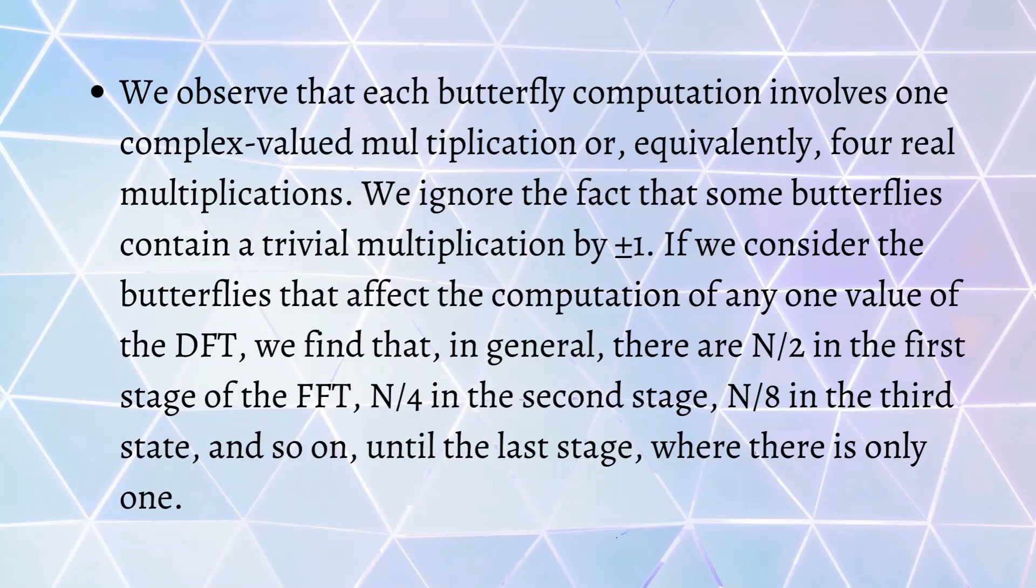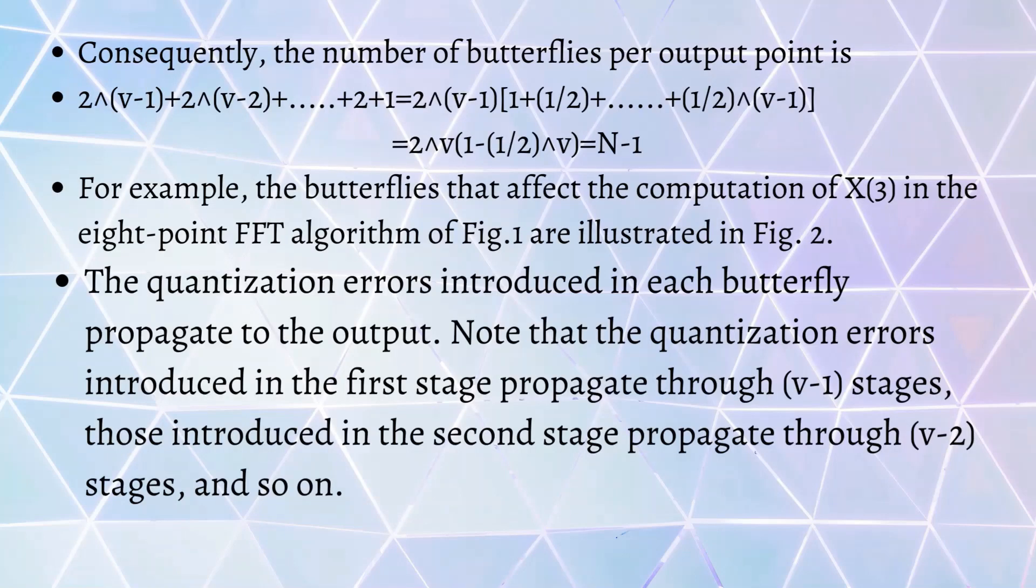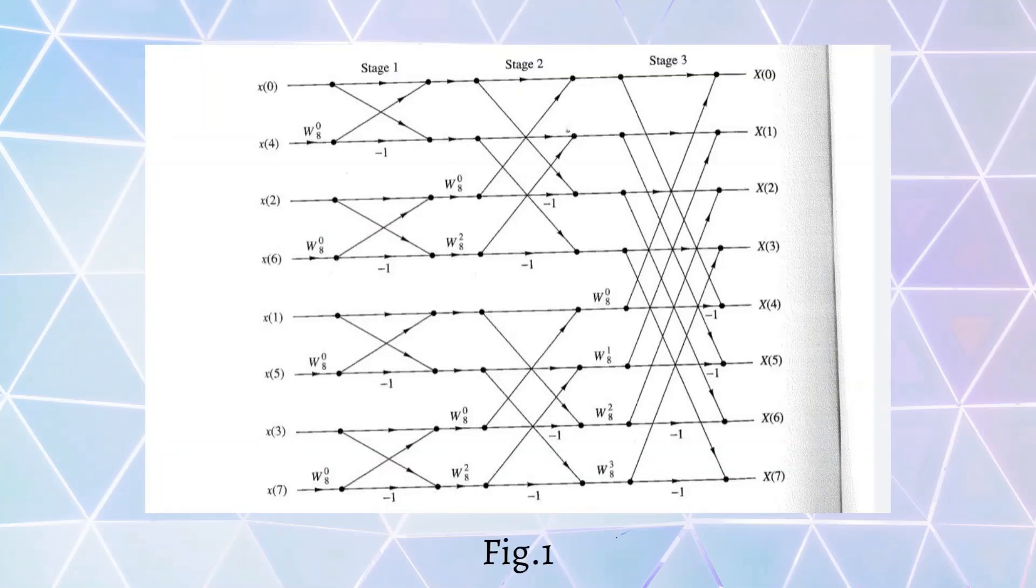You can observe that each butterfly computation involves one complex-valued multiplication or equivalently four real multiplications. We ignore the fact that some butterflies contain trivial multiplication by ±1. Consequently, in calculation of number of butterflies per output point, by mathematical analysis we get N-1, where N in this case is 8, so we will have 7 butterflies. We can see here in this figure we have 7 butterflies.